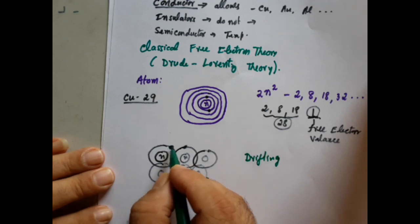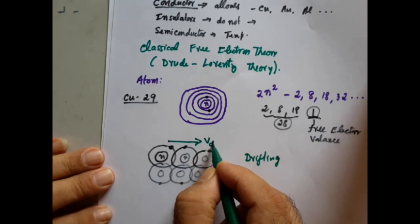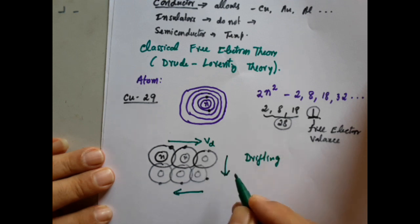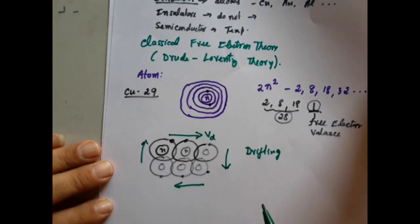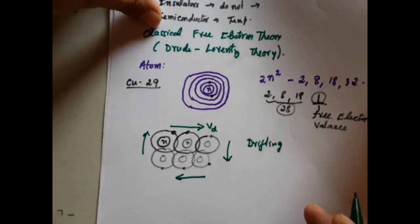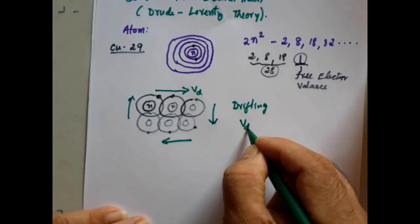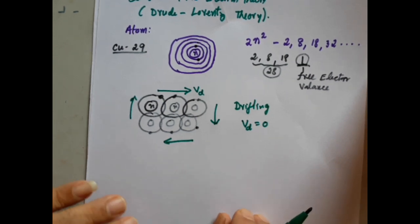This electron can easily move, so there is a net drift velocity represented by Vd. However, equal numbers of electrons drift in the opposite direction, or in other directions. Hence, in a metal in the absence of an electric field, the net drift velocity is equal to zero. Therefore, a conductor has no current in the absence of an external field.